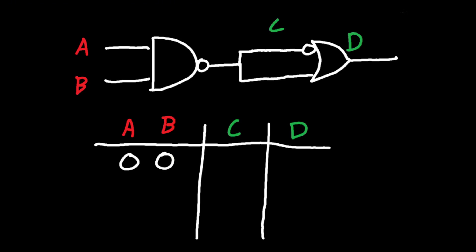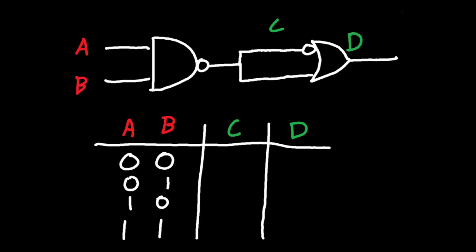Let's go ahead and look at the possible inputs. The possible inputs are 0,0 — 0,1 — 1,0 — and 1,1. When there's two inputs, these are the only possible combinations. Now let's look at the outputs. C is the output for the NAND gate, and D is the output for the OR gate.